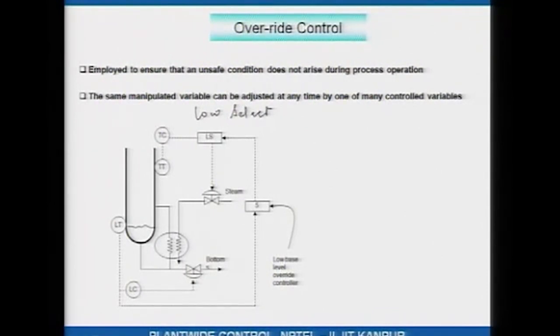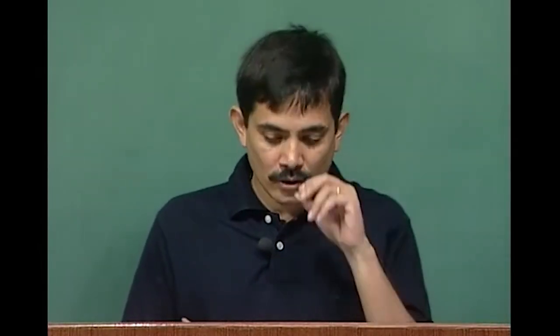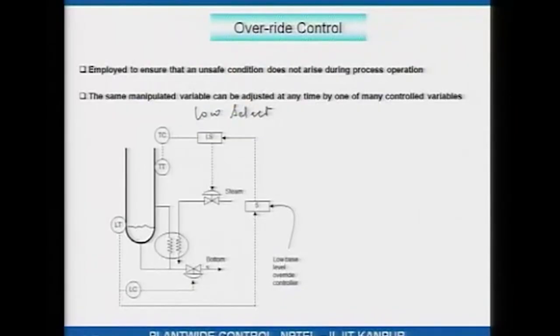Whichever is the lower of the two signals gets passed to the steam valve. On the other side, the level in the bottom sump of the column is controlled using the bottom flow rate. It may happen that the level is reducing, this valve is fully closed, and yet the level still goes on reducing. You would not like the level to go below say 10 percent because then the tubes will get exposed.